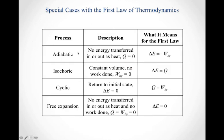To sum up, here are the four special processes: an adiabatic process, an isochoric or isovolumetric process, a cyclic process, and an adiabatic free expansion. In terms of the first law: Q equals zero in an adiabatic process, so that term disappears. Work equals zero in an isochoric process, so that term disappears. Delta E equals zero around a full cycle, so that term disappears. And in an adiabatic free expansion, delta E simply equals zero because both individual energy transfer terms equal zero.